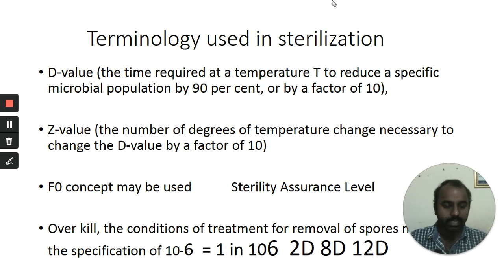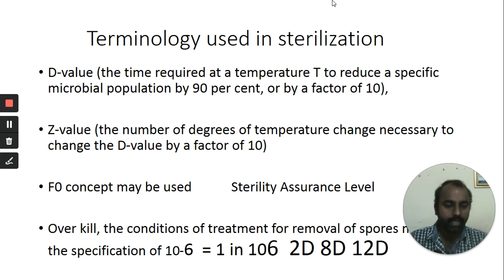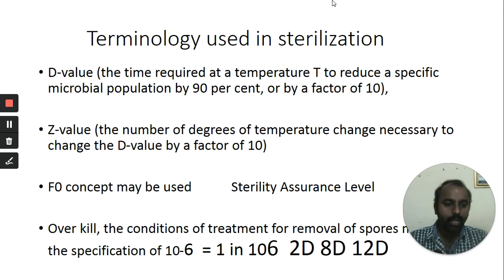In dry heat sterilization using a hot air oven, the standard protocol is 160°C for two hours. If you change the temperature — either decreasing or increasing — the modified protocol should provide the same lethality as the standard protocol. This equivalent degree of lethality is expressed in terms of the F0 concept. Sterility assurance level (SAL) tells us how well products are sterile or non-sterile.